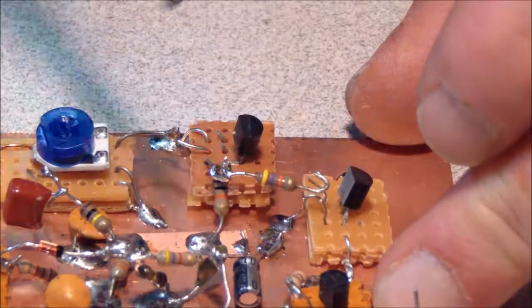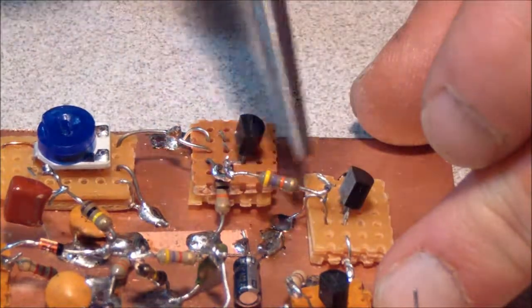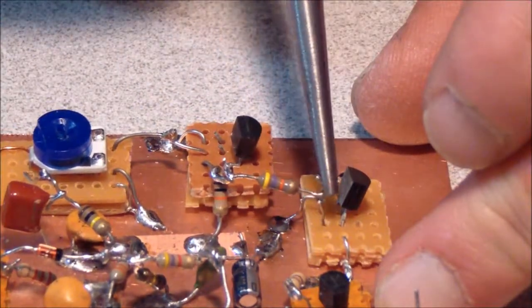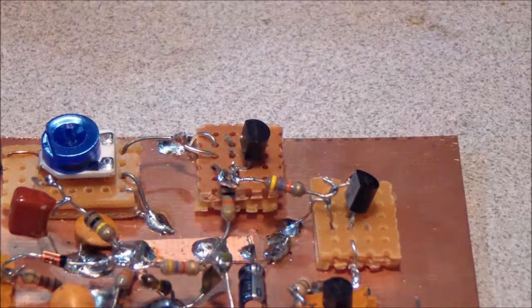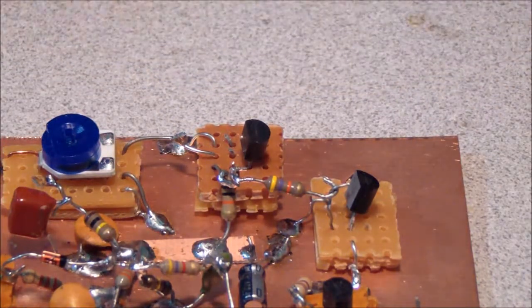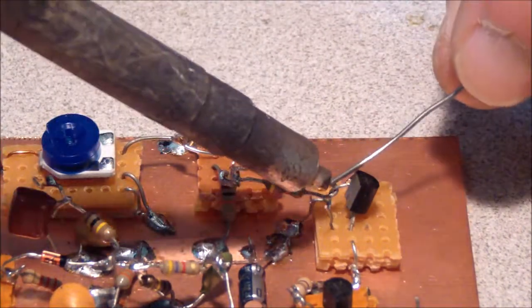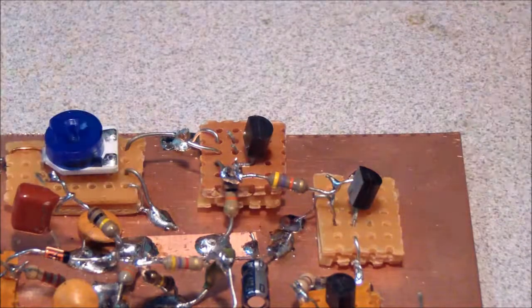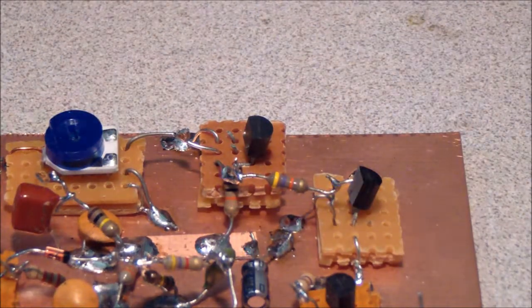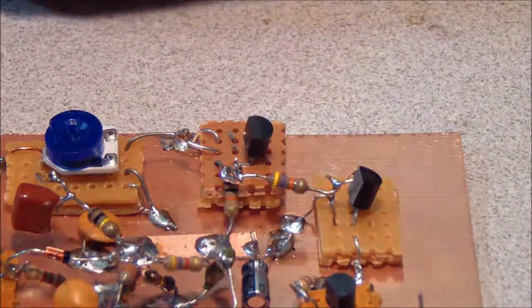This couples the DC voltage from the first AGC stage to this second stage. We'll just put a drop of solder on that because we're going to add some more parts to the base circuit.